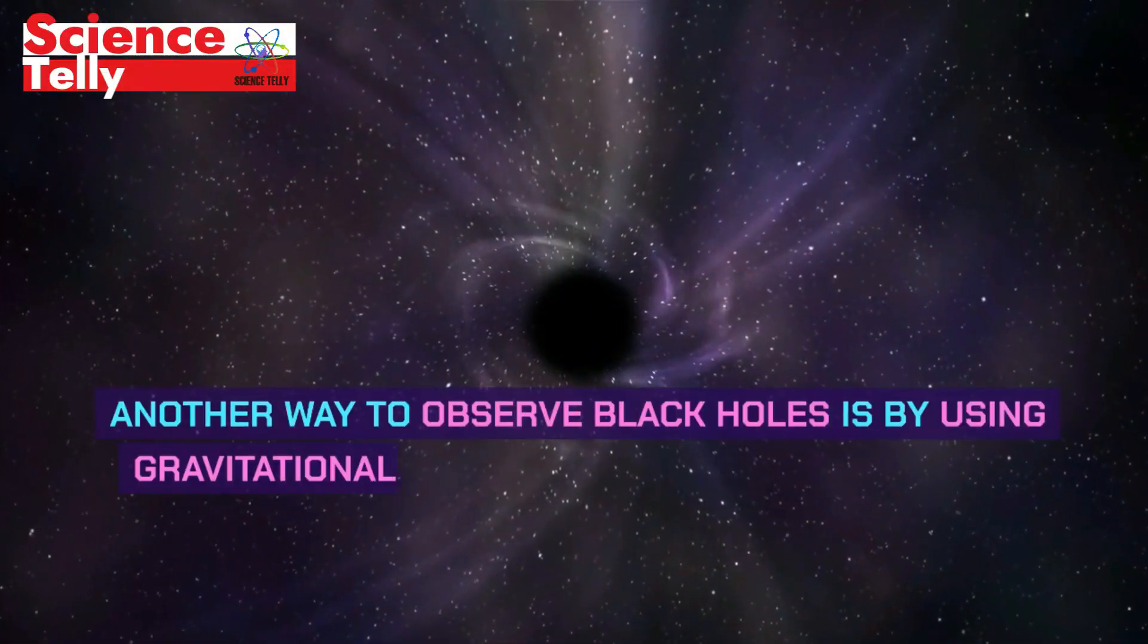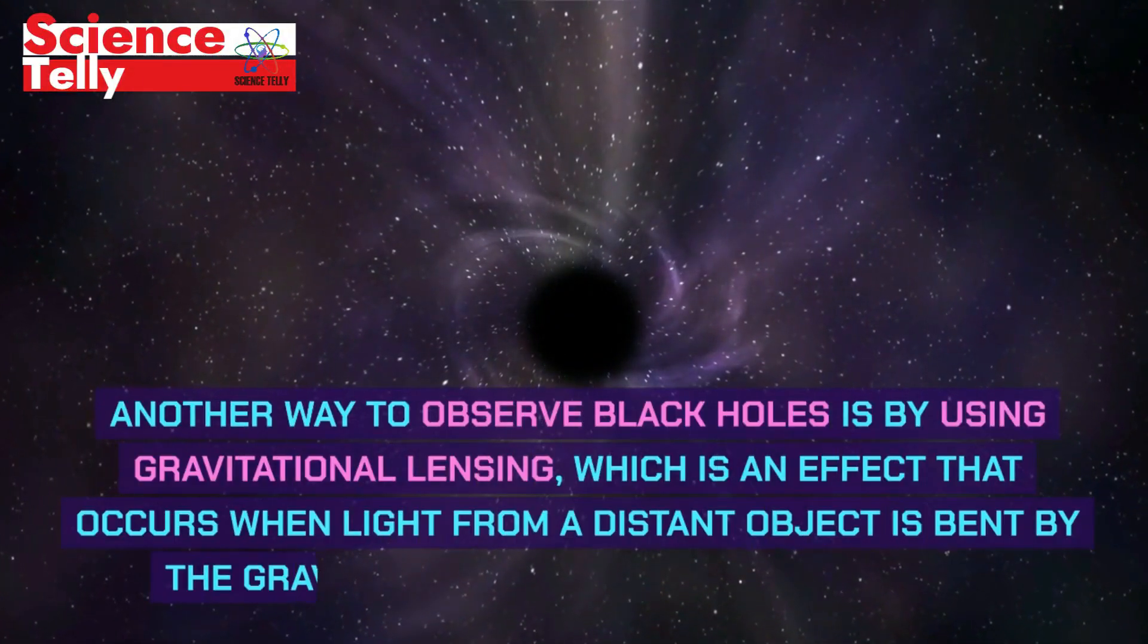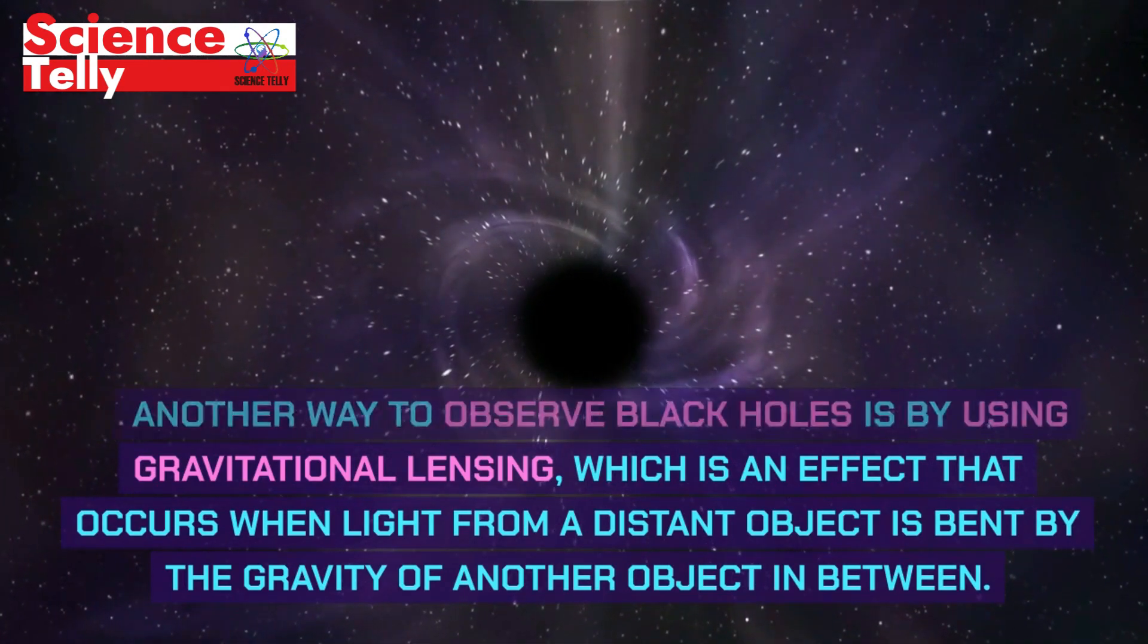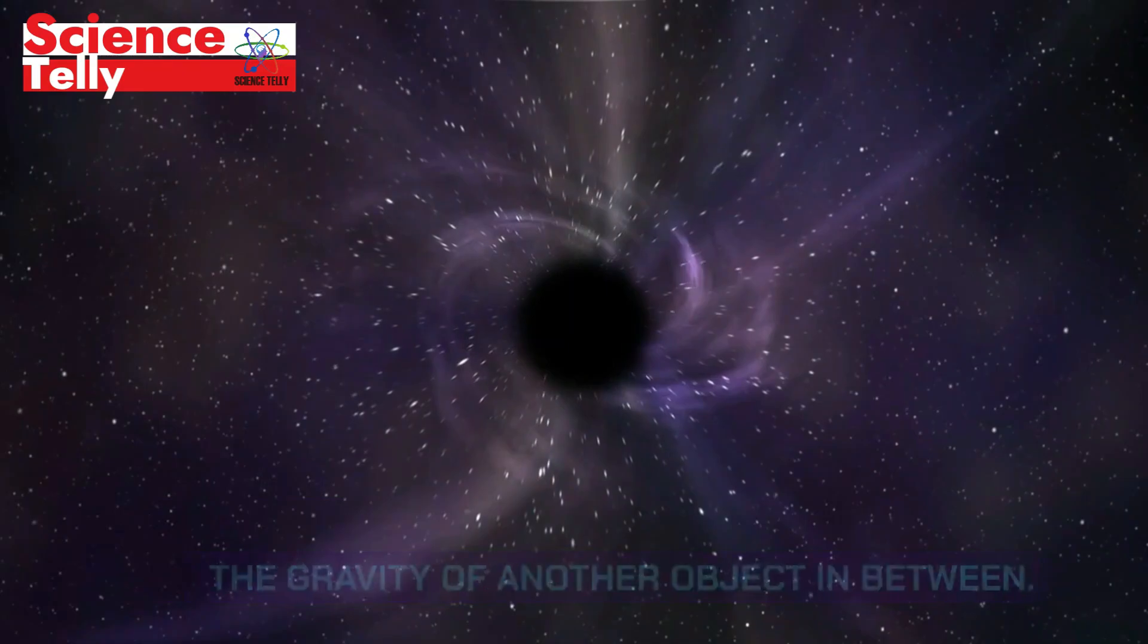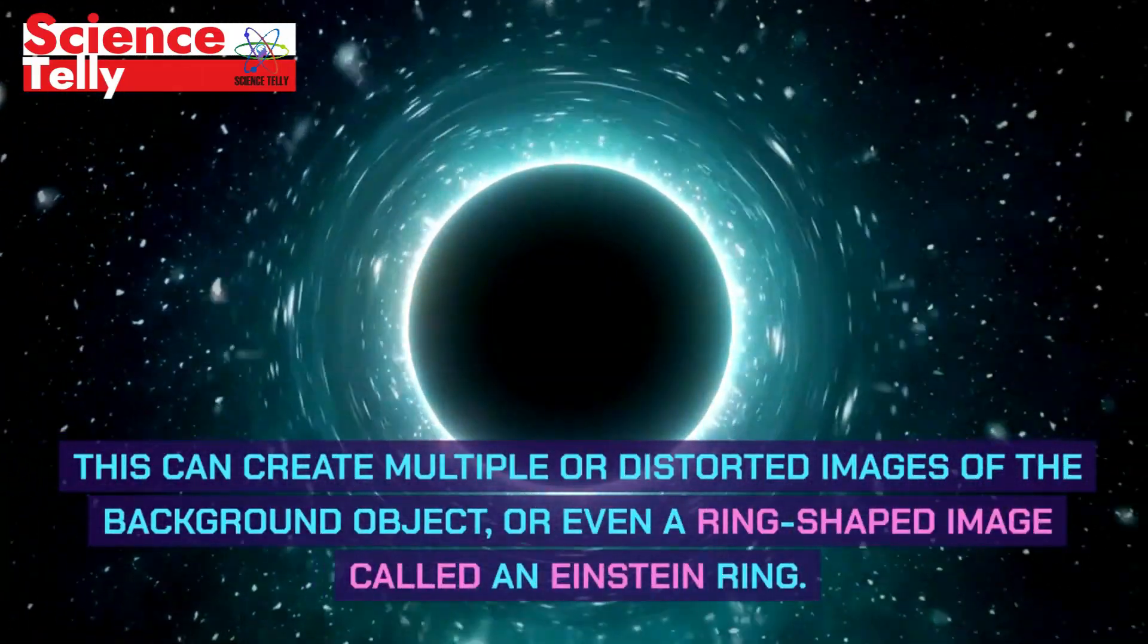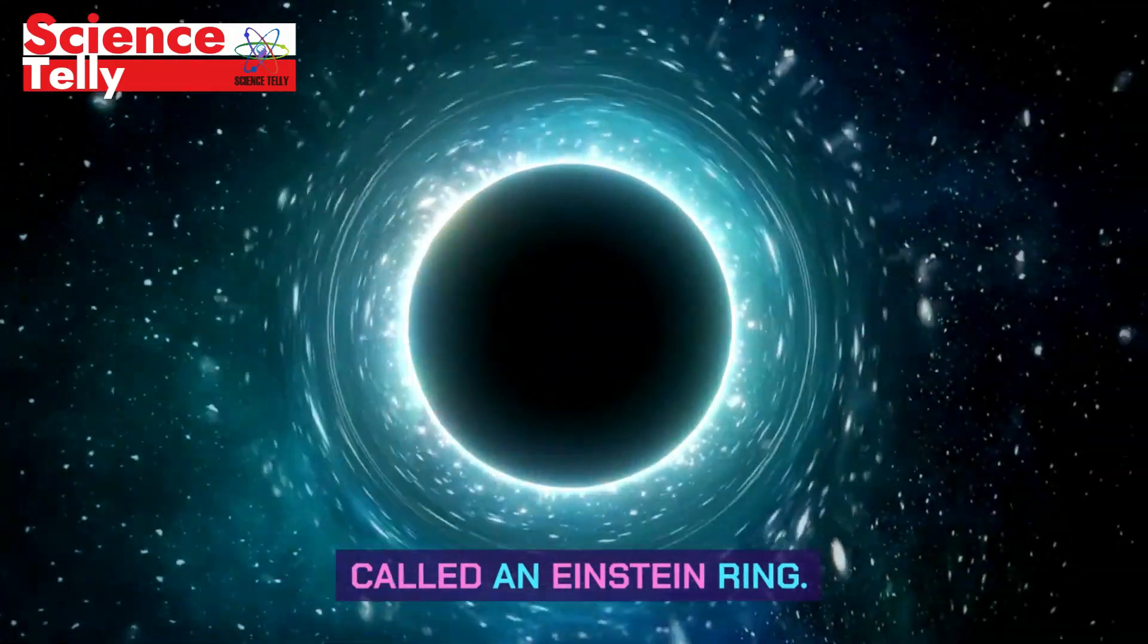Another way to observe black holes is by using gravitational lensing, which is an effect that occurs when light from a distant object is bent by the gravity of another object in between. This can create multiple or distorted images of the background object, or even a ring-shaped image called an Einstein ring.